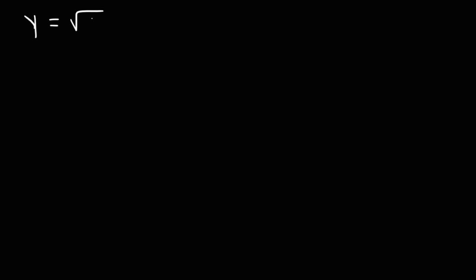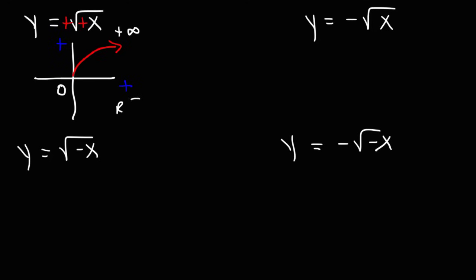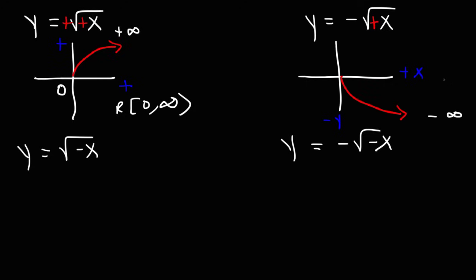Now let's look at radical functions. For the square root of x, both the inside and outside are positive, so the graph opens toward quadrant 1. The lowest y value is 0 and the highest is infinity, so the range is 0 to infinity. For negative square root of x, there's a negative outside, so it goes toward the positive x-axis but the negative y-axis. The lowest y value is negative infinity and the highest is 0, so the range is negative infinity to 0.